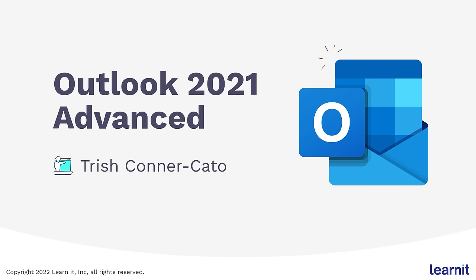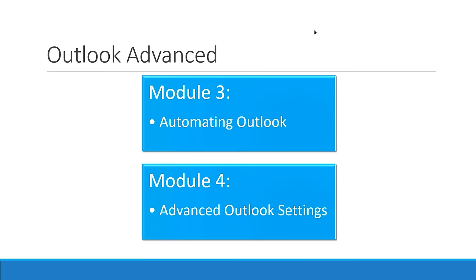In the final module, you'll learn how to work with multiple calendars, import and export contacts, share and delegate access to other users, create and assign tasks, and how to back up your Outlook items. If you're enjoying these videos, please like and subscribe. If you have any questions, please join our off-site community — the link is in the description. If this course has exercise files, you'll find them in the video description below. Now it's time to move on to the advanced portion of Outlook 2021, which consists of two modules: module three is automating Outlook and module four is advanced Outlook settings.